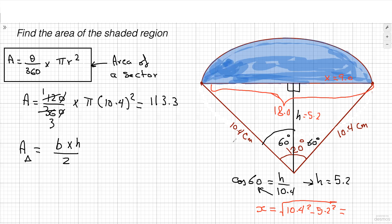And therefore, the area of this triangle here will be base, which is 18.0 times height, which is 5.2 divided by 2. So, and therefore, this area will be 46.8.